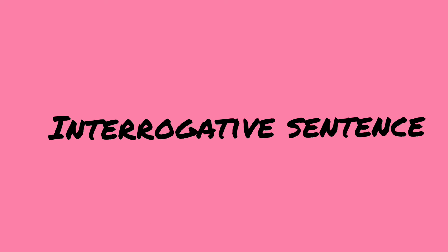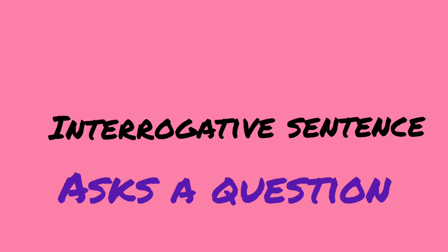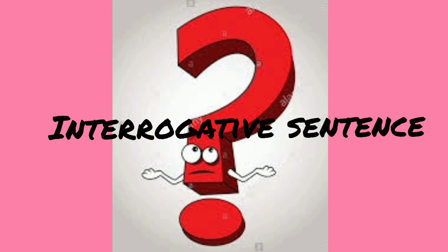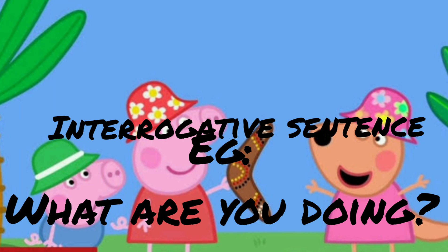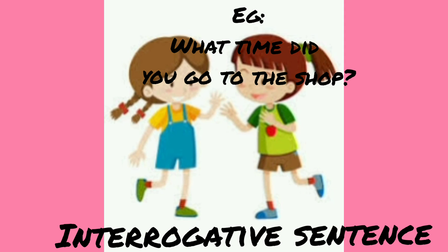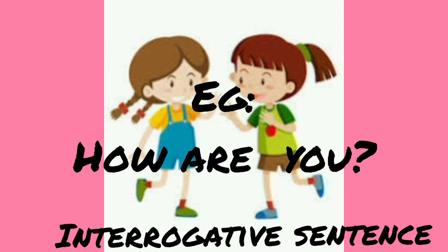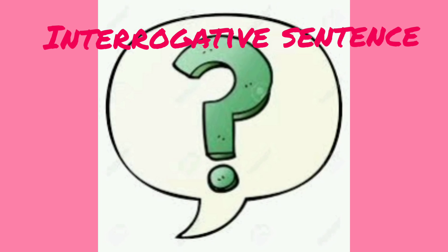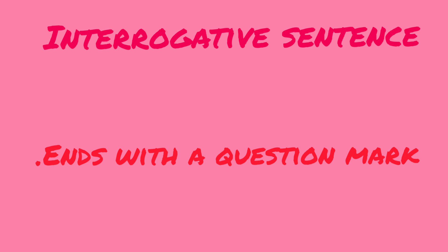The last one is interrogative sentence. This type of sentence asks a question. It ends with a question mark. Some examples are: What are you doing? Where do you live? What time did you go to the shop? How are you? The interrogative sentence always ends with a question mark.